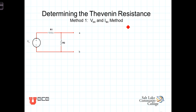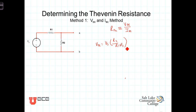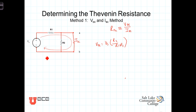The first method takes advantage of the definition of R Thevenin. R Thevenin is defined as the ratio of the open circuit voltage to the short circuit current. We already determined the open circuit voltage is V_S times R2 over R1 plus R2. Now we need to determine the short circuit current — that is, the current that flows when we place a wire between terminals A and B. The short circuit pulls the voltage across R2 to zero, so all current flows through R1: I short circuit equals V_S divided by R1.